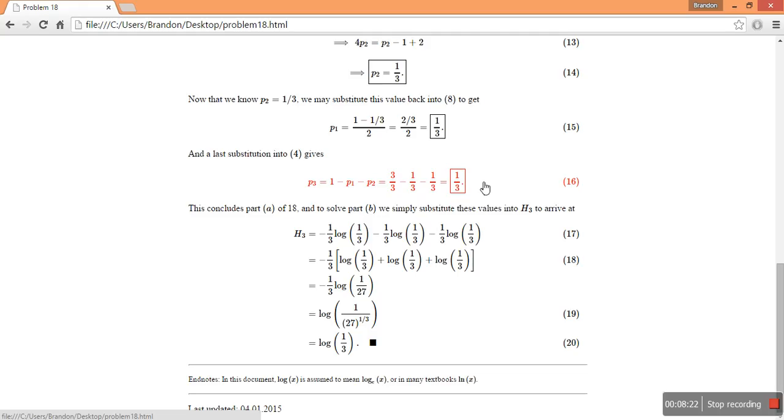And that sums up part A of the problem. But we also want to show, analytically, that the maximum value of our diversity index can possibly be log of 3.